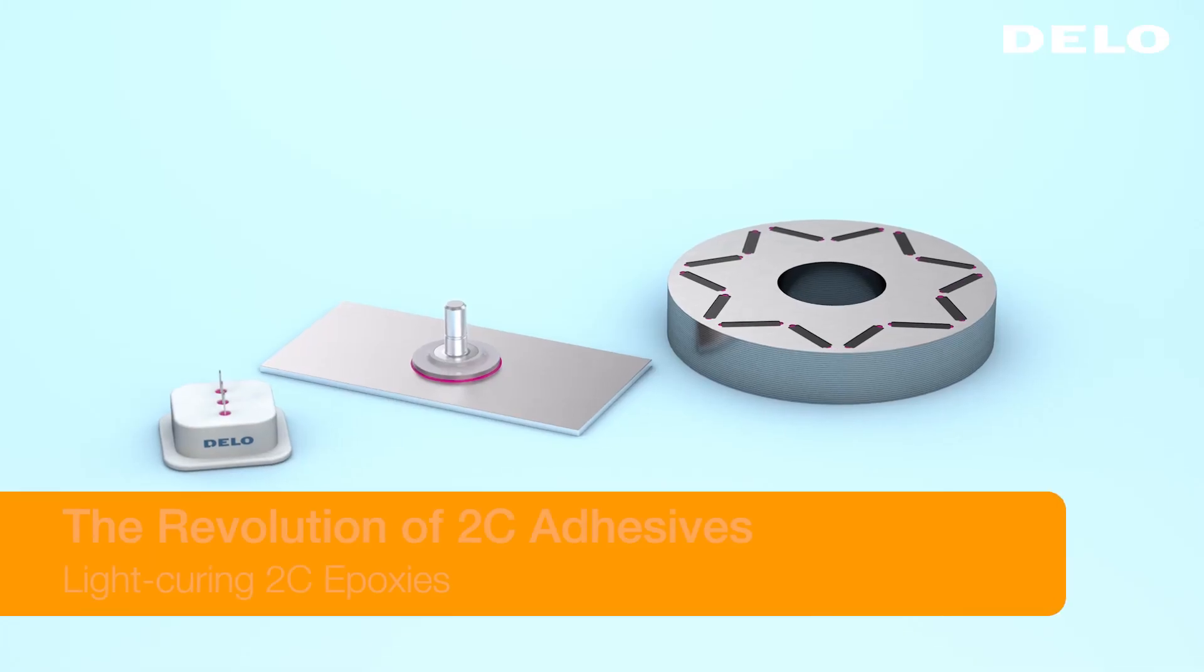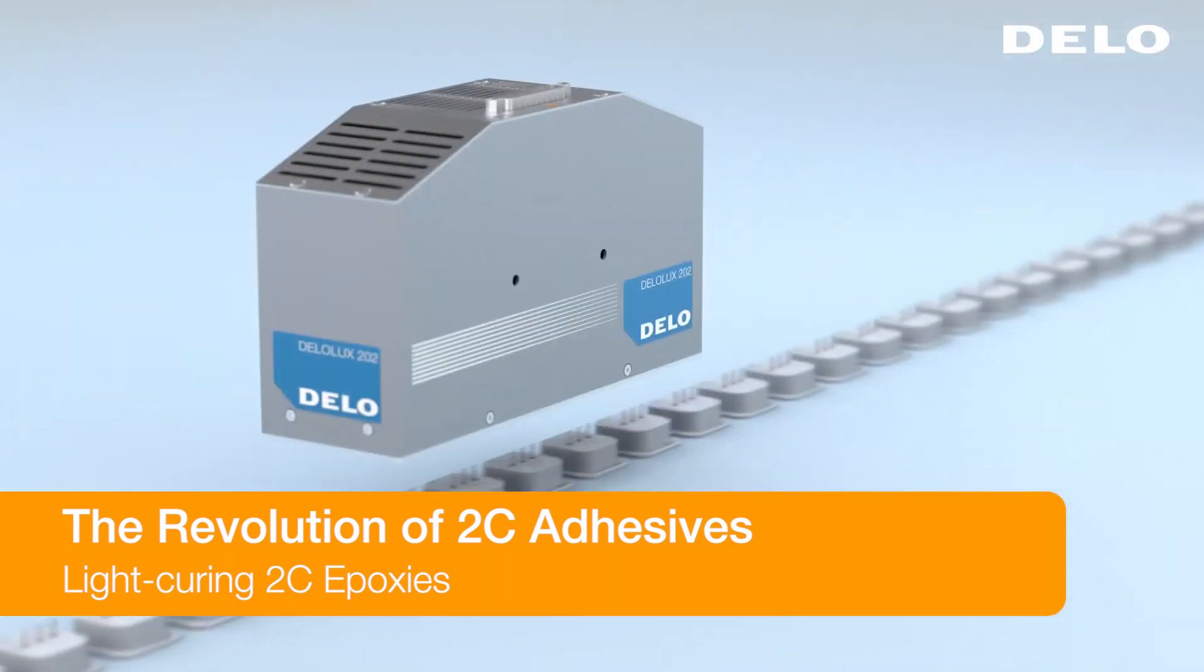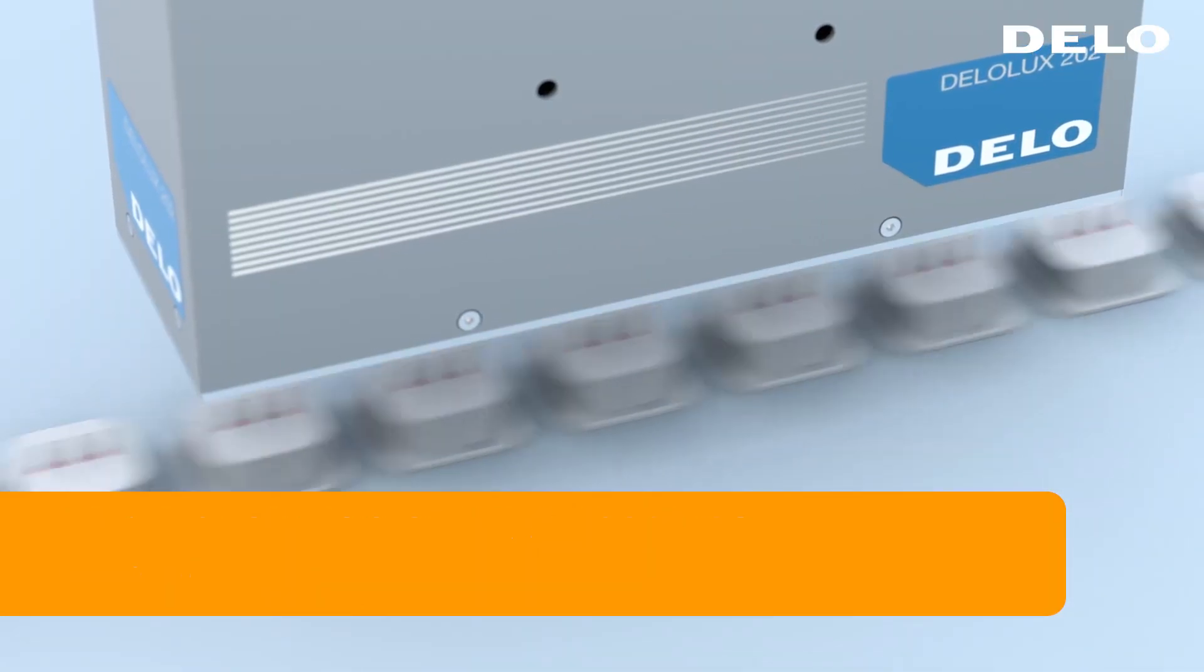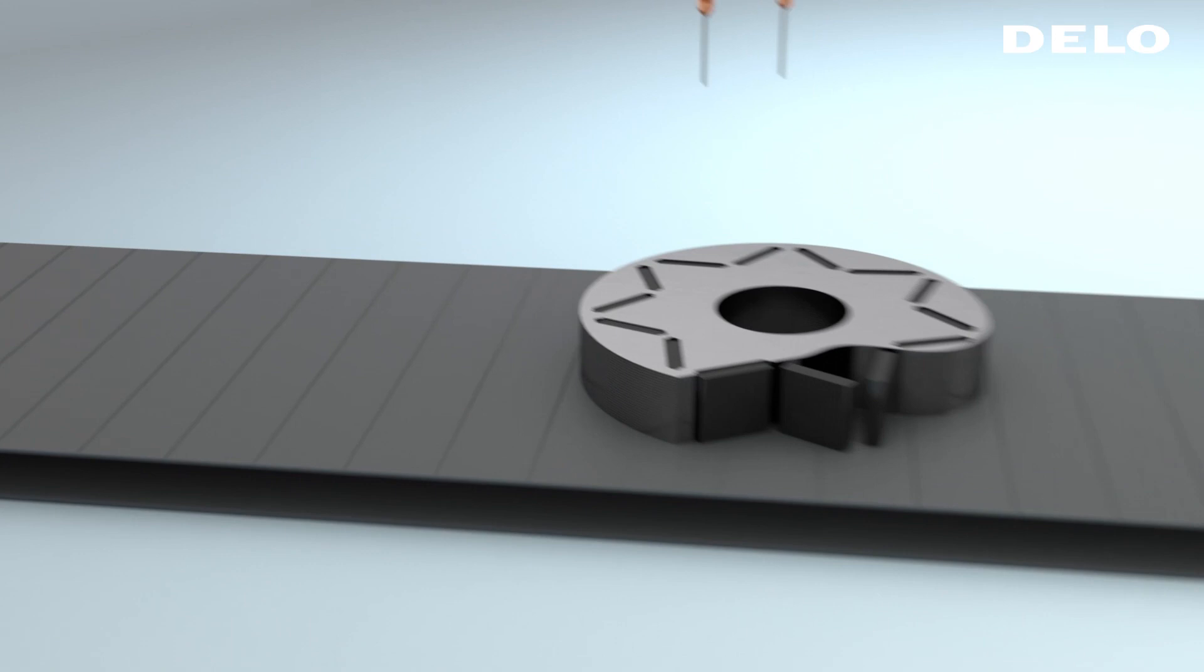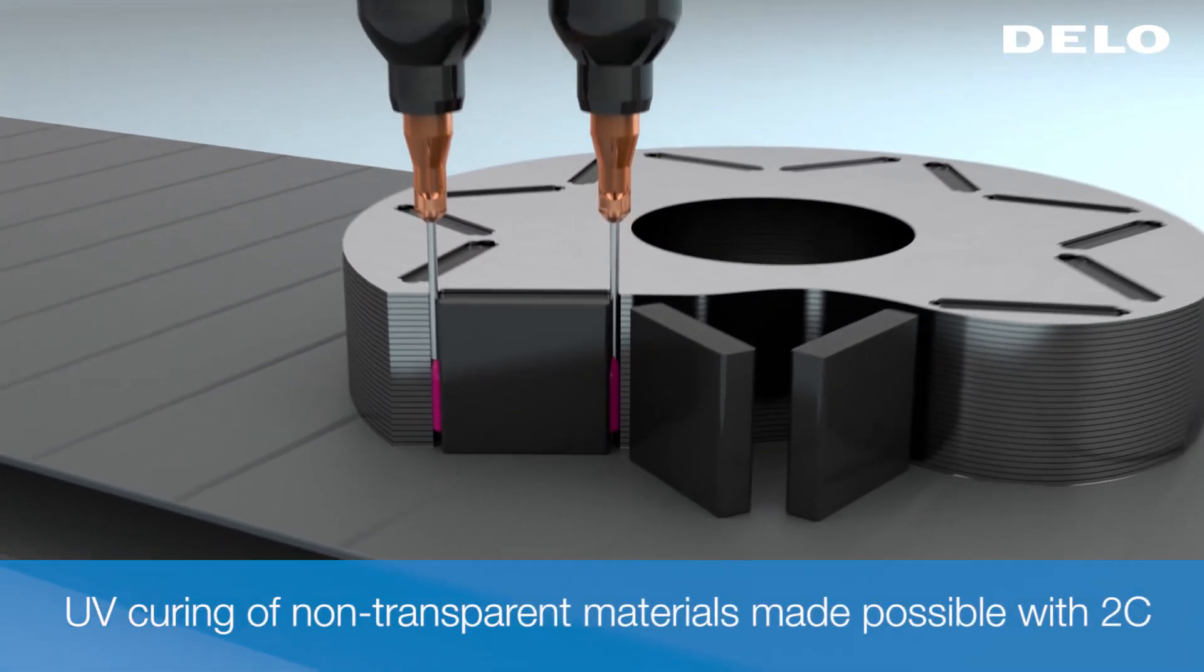In industrial assembly processes the most important parameter is cycle time. That's why light curing processes are often employed. However, most materials are not transparent or contain shadowed areas so that they don't allow for direct light curing.